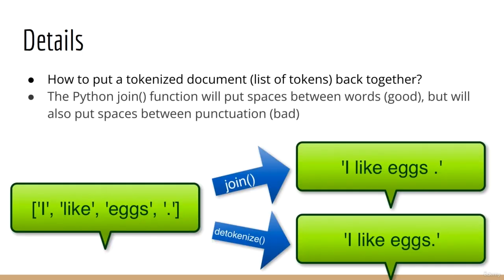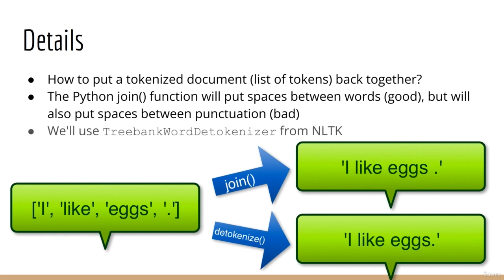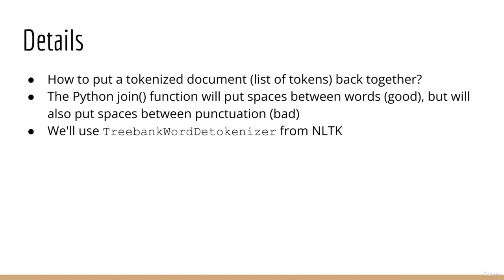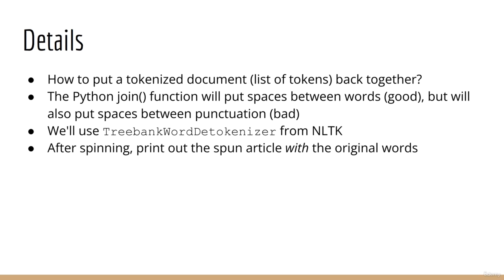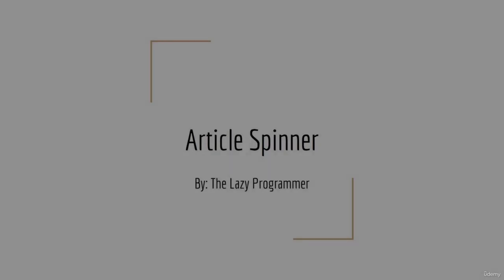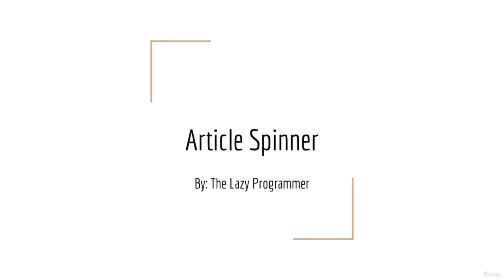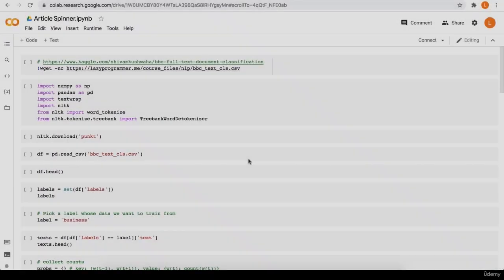Another interesting task to consider is: we'll end up with a tokenized document, but how are we going to put it back together so that it looks like something we can read? One way to do this is to use the join function in Python. However, this is not perfect because if we join each token with a space, we'll be putting spaces before punctuation as well, which is not correct English syntax. Instead, we'll be using a class called TreeBankWordDetokenizer from NLTK, which can be used to detokenize a list of tokens. Once you've finished spinning your article, you should print the result displaying both the original words and replacements. Good luck, and I'll see you in the next lecture.